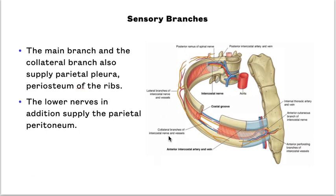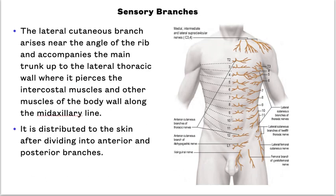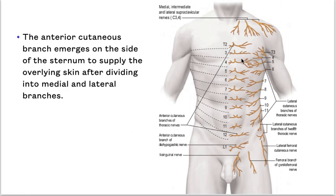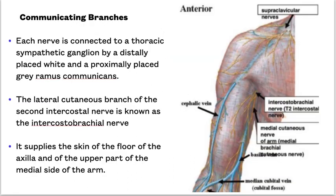The lower nerves, in addition, supply the parietal peritoneum. The lateral cutaneous branch arises at the angle of the rib and accompanies the main trunk up to the lateral thoracic wall, where it pierces the intercostal muscles and other muscles of the body wall along the mid-axillary line. It is distributed to the skin after dividing into an anterior and a posterior branch. The anterior cutaneous branch emerges on the side of the sternum to supply the overlying skin after dividing into a medial and a lateral branch. Each nerve is connected to a thoracic sympathetic ganglion by a distally placed white and a proximally placed grey ramus communicans.